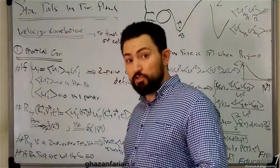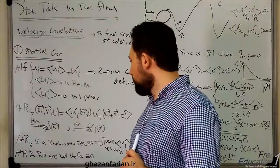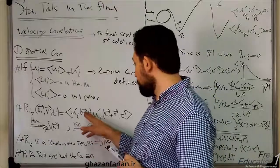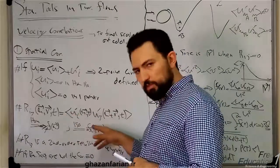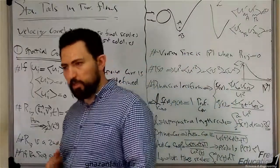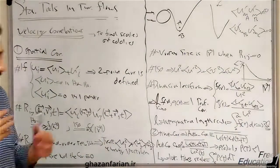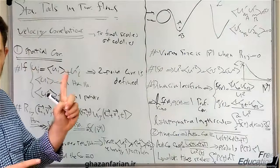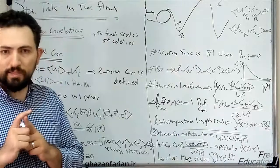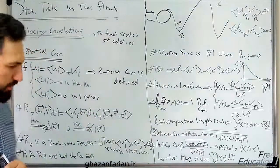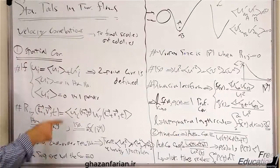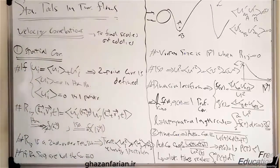And also in isotropic flows, you can also omit the vector form of r here. And the result of this correlation is just a function of the magnitude of the r vector, or distance. It's invariant with respect to direction, so the direction of the r vector is not important, and just the distance between these two points is important. So in isotropic flows, which is also homogeneous, the result of this relation is not a function of x, and also the direction of the r vector.